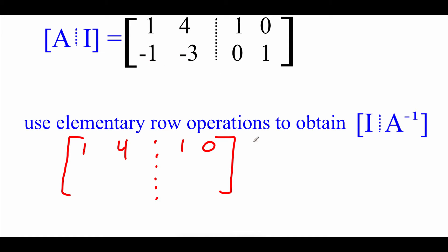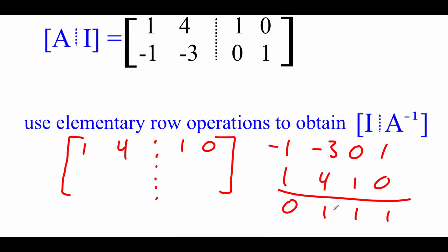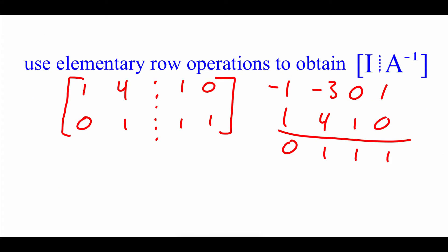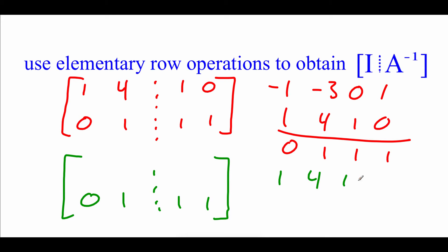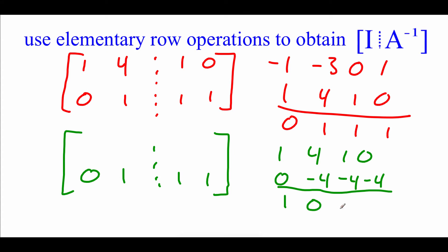We need a 0 in the first column and a 1 in the second column of the second row. Taking the second row and adding the first row gives us 0, 1, 1, 1 — filling that into our second row. Now this is in row echelon form, but we need to get it into reduced form, working from the bottom up. The bottom row is good, but the top row reads 1, 4, 1, 0, and we need to get rid of the 4. Taking our new bottom row times negative 4 gives 0, negative 4, negative 4, negative 4. Adding those together gives 1, 0, negative 3, negative 4, which fills into our top row.